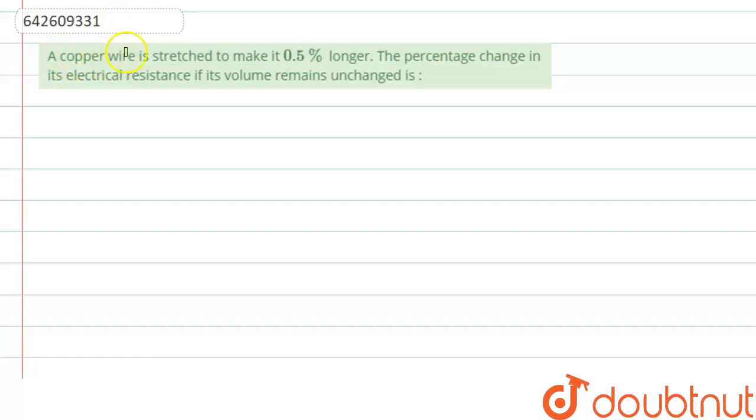The question says that a copper wire is stretched to make it 0.5% longer. Find the percentage change in resistance if the volume remains unchanged—that is, the volume is constant. In the question, it is given that we have to find out...